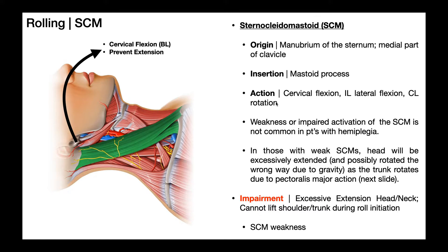Generally speaking, in most cases of hemiplegia following stroke, it's actually not common to see weakness or impaired activation of the sternocleidomastoid — this is the rarest one. The other three muscles are going to be very common. But there are some cases where this can be weak, and in those individuals, when they roll from supine into sidelying, the head is probably going to be excessively extended and possibly rotated the wrong way due to gravity.